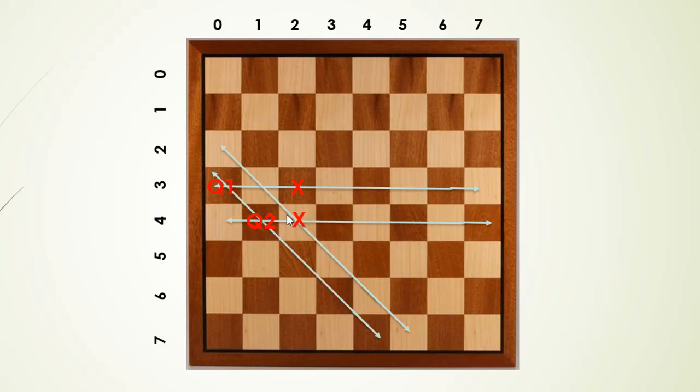Say we generate the row number 4 again. So now this row is already used by our second queen. So we cannot use it and we generate another row. So this time, let's say it's row number 3. But again, this one is used by queen number 1. So once again, we cannot use this row.